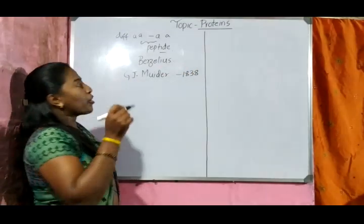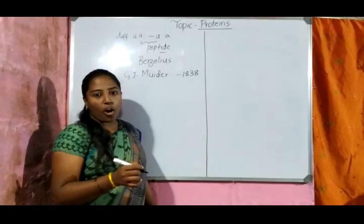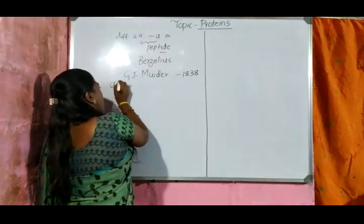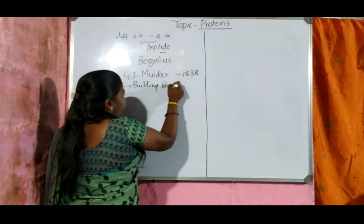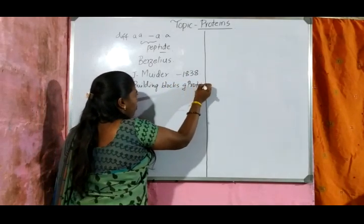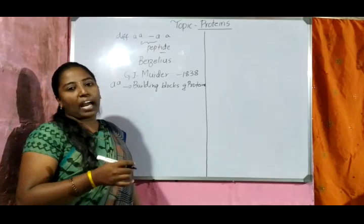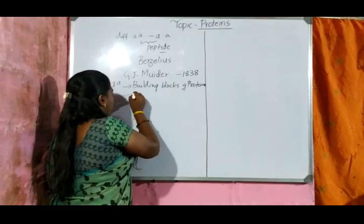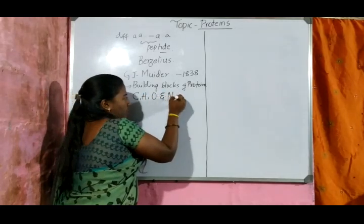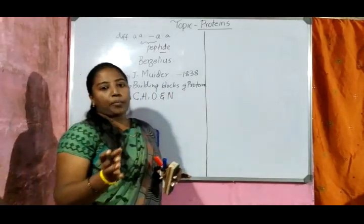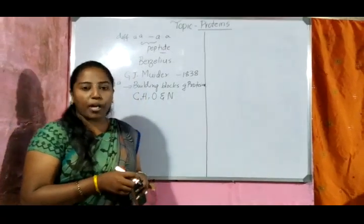Proteins are made up of different types of amino acids — we can call amino acids the building blocks of proteins. These proteins are chemically made up of carbon, hydrogen, oxygen, and nitrogen. The term protein is used for a polypeptide made up of more than 50 amino acids.